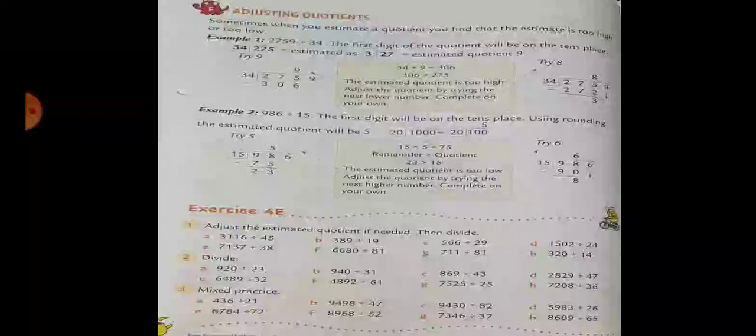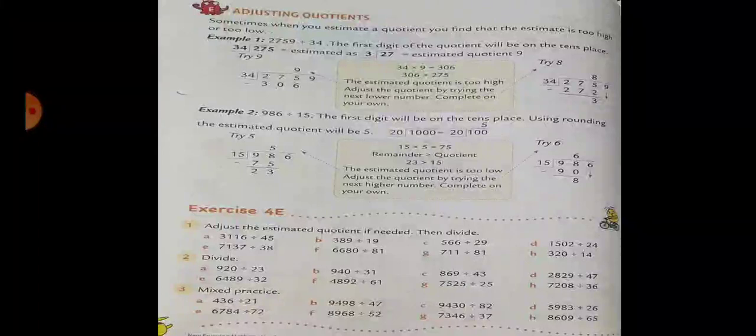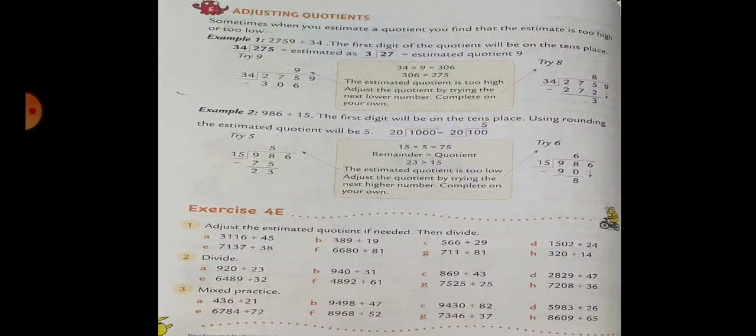15 times 6 are 90. 98 minus 90 is 8. And we have to put down 6.